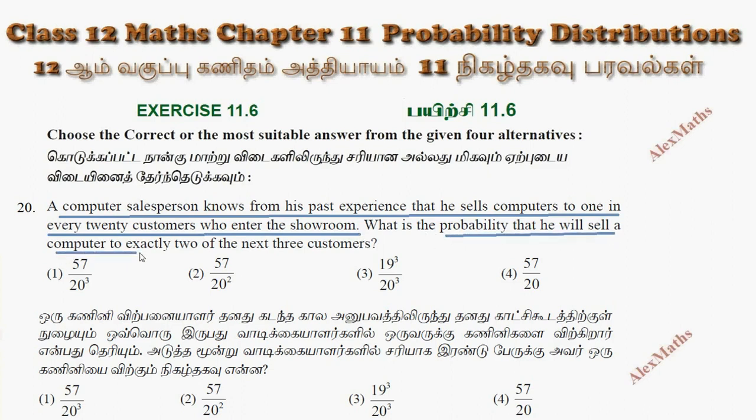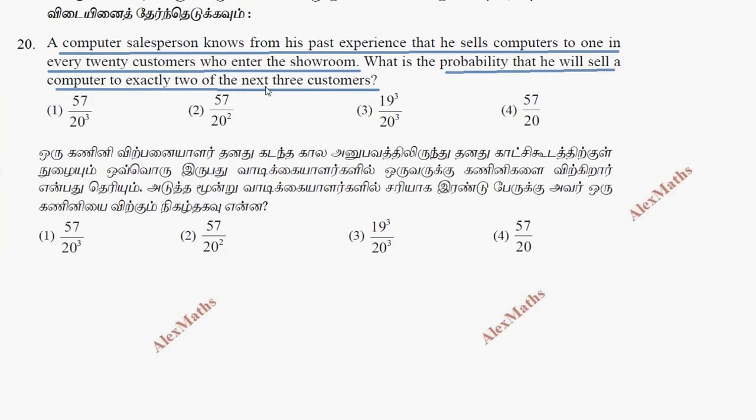So you can see three customers, so n equals 3. We need exactly two, so P(x = 2). We need to find the probability. The probability of failure q equals 1 minus p equals 19 by 20.